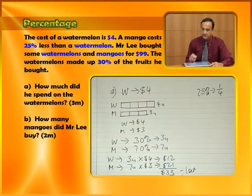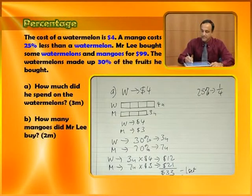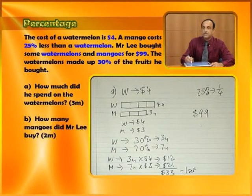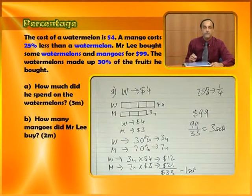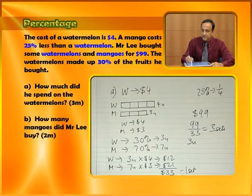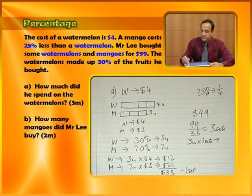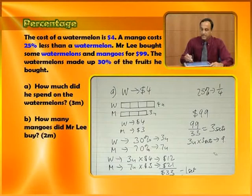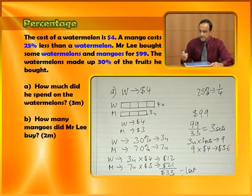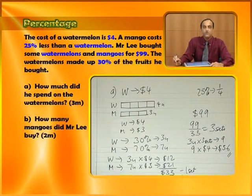This is one set. How much did he spend in the end? $99. He spent $99, of which one set was $33. So $99 divided by $33 gives us three sets of mangoes and watermelons. If there were three sets and we had three units in each set — three units times three sets — how many watermelons did we have? Nine. We had nine watermelons purchased. Nine watermelons times $4 each gives us $36. So he spent $36 on watermelons.